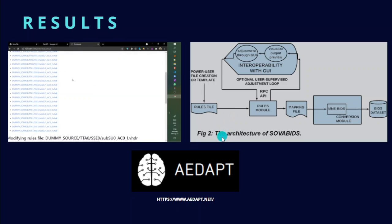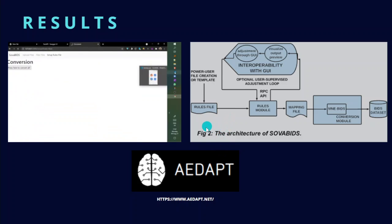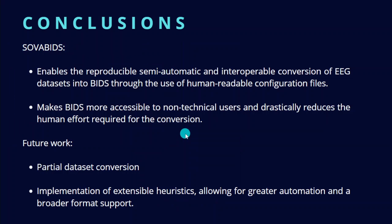Currently, the software has been tested on BrainVision and NeuroScan files, and it has become part of the AEDAD project. In conclusion, SodaBITS enables the reproducible, semi-automatic, and interoperable conversion of EEG datasets into BIDS through the use of human-readable configuration files. It also makes BIDS more accessible to non-technical users and drastically reduces the human effort required for the conversion. Future work will focus on partial dataset conversion and the implementation of extensive heuristics, allowing for greater automation and broader format support.